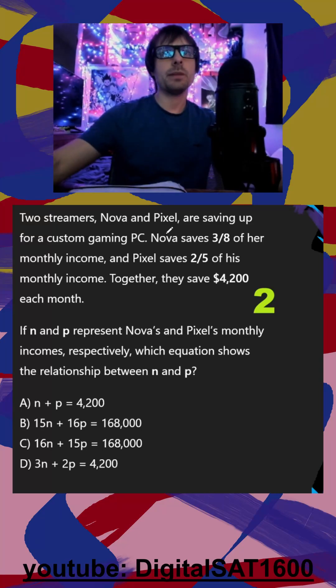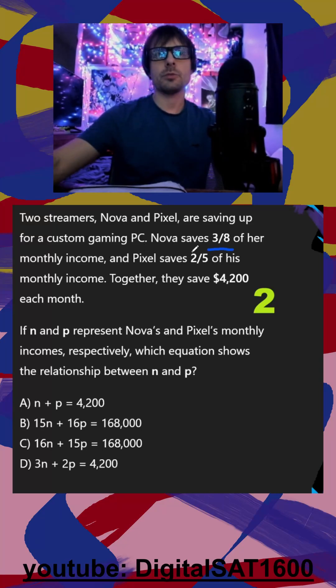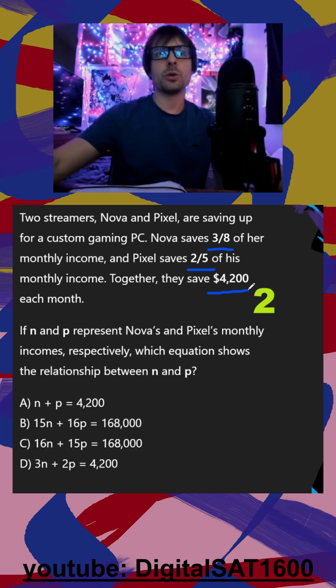Two streamers, Nova and Pixel, are saving up for a custom gaming PC. Nova saves three-eighths of her monthly income, and Pixel saves two-fifths of his monthly income. Together, they save $4,200 each month.